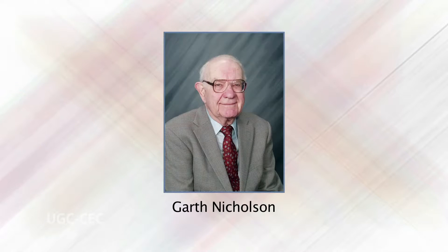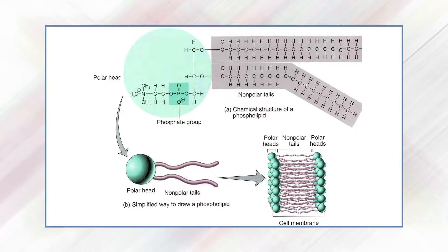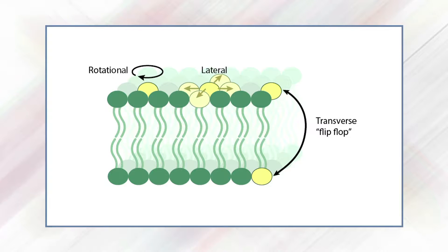The fluid mosaic model was introduced in 1972 by S. Jonathan Singer and Gert Nicolson. It states that membrane components are free to diffuse in the plane of the membrane, though some membrane proteins are restricted to specific regions by interactions with cytoskeleton proteins. Although many phospholipids and membrane proteins can move laterally within a leaflet, they do not flip-flop from one leaflet of the bilayer to the other; such flip-flop is very rare.